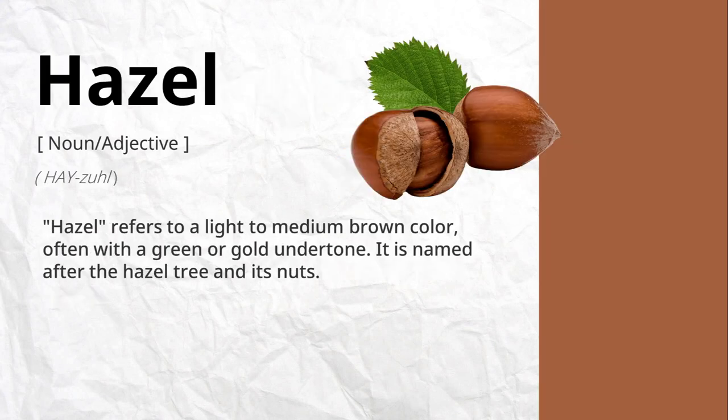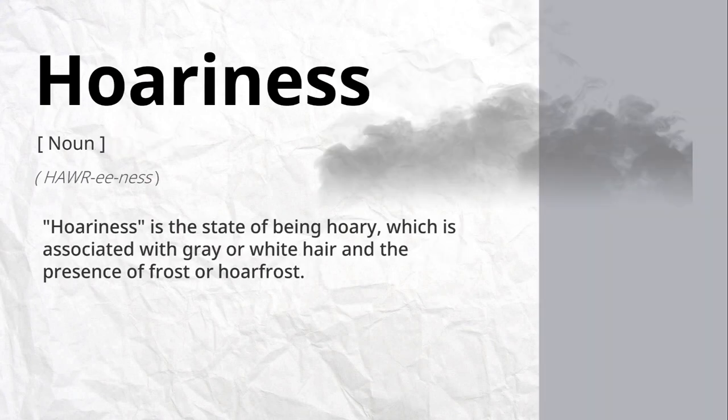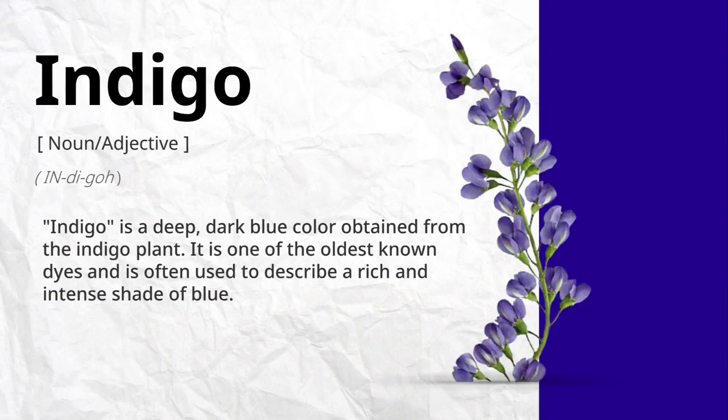Hazel refers to a light to medium brown color, often with a green or gold undertone. It is named after the hazel tree and its nuts. Hoariness is the state of being hoary, which is associated with gray or white hair, and the presence of frost or hoarfrost.